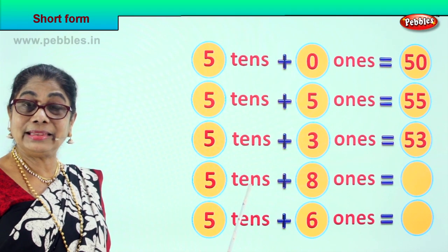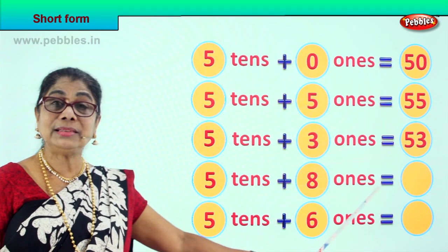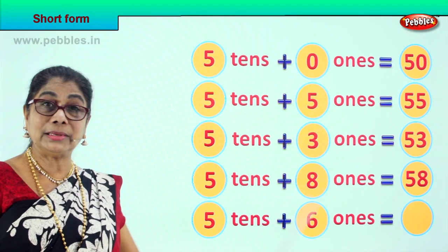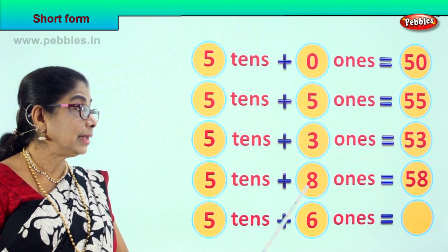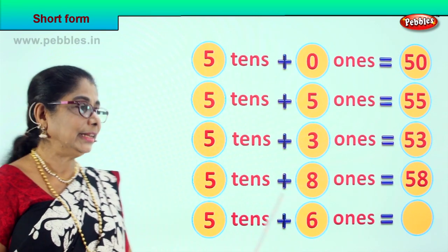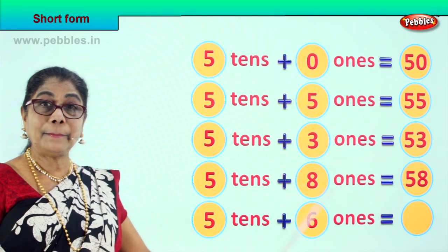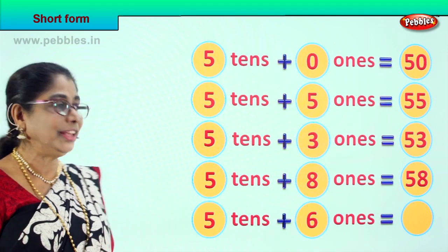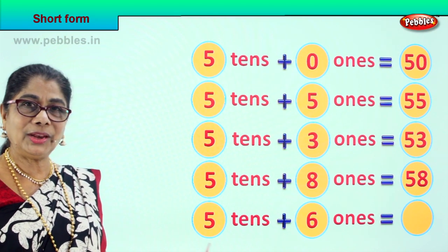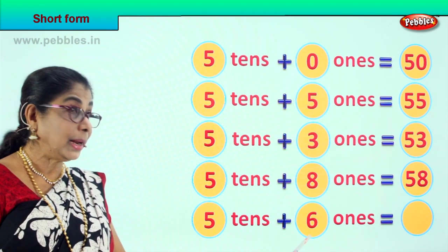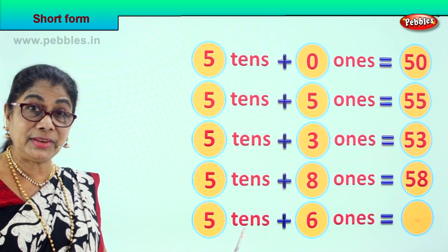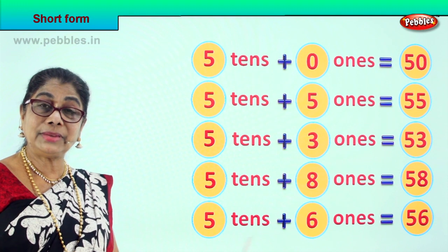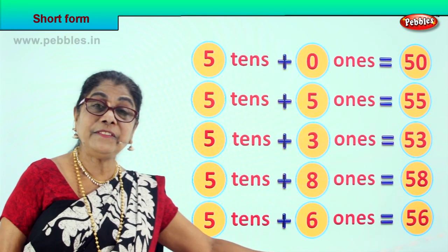Next, 5 tenths plus 8 ones is equal to? 5 tenths is 50. So, 5 tenths plus 8 ones is equal to? 58. Very good. Look, 5 tenths plus 6 ones. 5 tenths is 50 plus 6. 50 plus 6. 5 tenths plus 6 ones is equal to? 56.